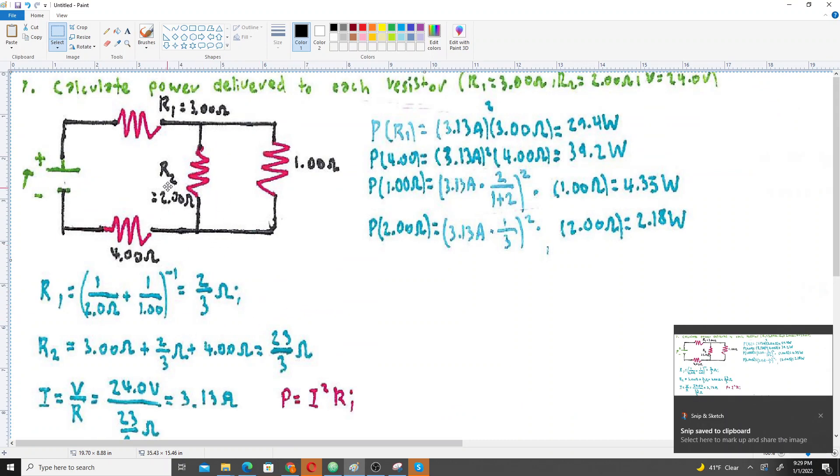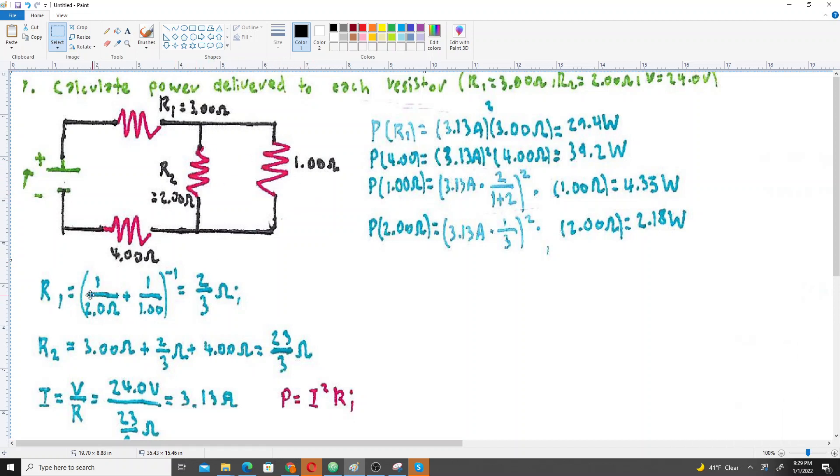Alright, R1, R2, and this resistor are in parallel, so we reciprocal add. So it's going to be 1 over 2 plus 1 over 1 ohm inverse, you get 2 over 3. That parallel branch is in series with this R1 here, so we can just add 3 and 4 to the two-thirds we got, and you get 23 over 3.